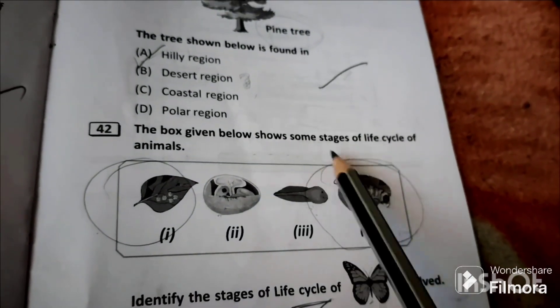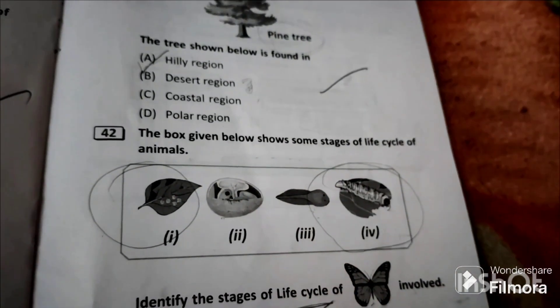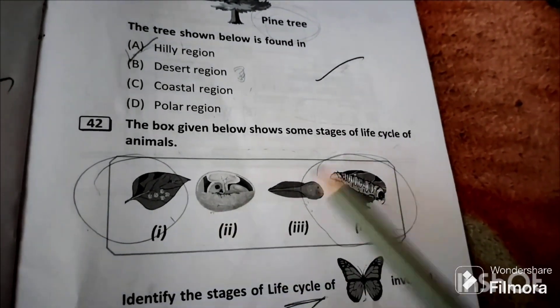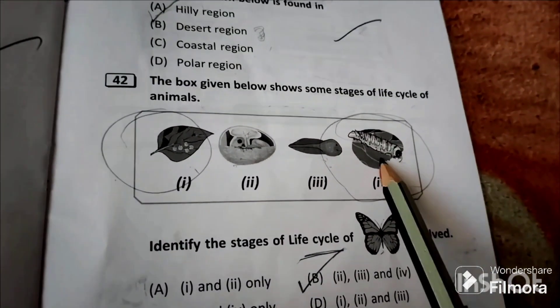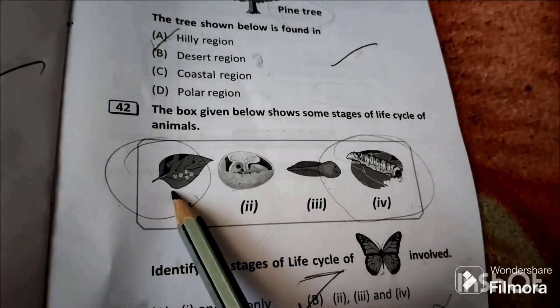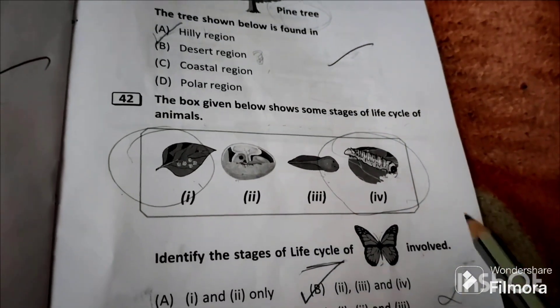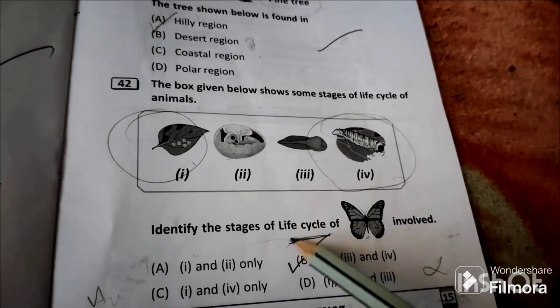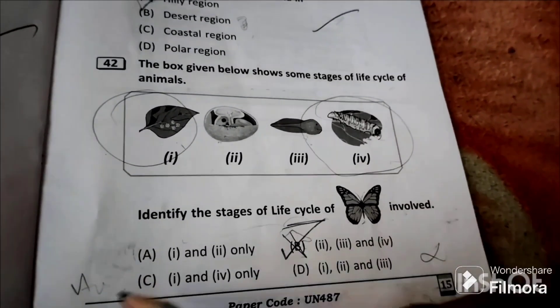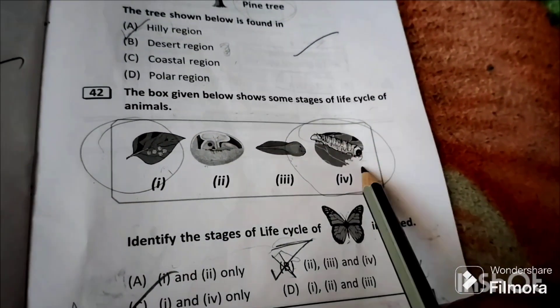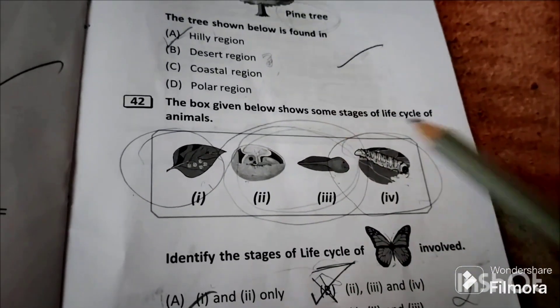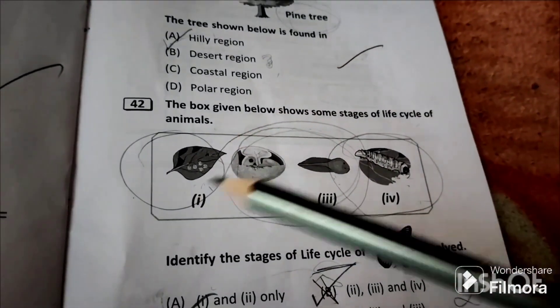Question 42: The box given below shows some stages of life cycle of animals. Caterpillar... This is larva and this is X stage and this is larva stage of butterfly. Identify the stages of life cycle of butterfly. Answer: one and four only. These are the stages. Two, one, three are not the stages of butterfly.